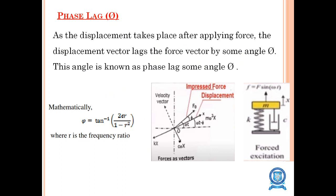Phase lag (φ) is the displacement which takes place after applying the force. The displacement vector lags the force vector by some angle φ, known as phase lag. Mathematically, φ equals tan inverse of [2εr divided by (1 minus r²)], where r is the frequency ratio. The phase lag frequency curve uses the same formula φ equals tan inverse of [2εr / (1 minus r²)].